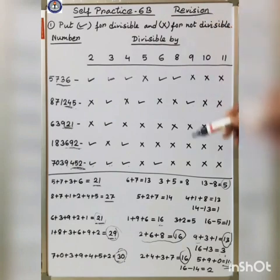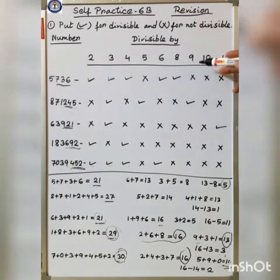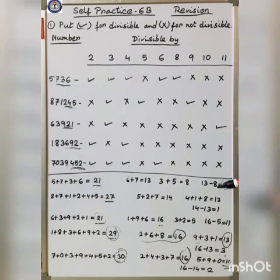So this is the divisibility rule for 2, 3, 4, 5, 6, 8, 9, 10, and 11. This is a quick recap. That's all for today. Thank you.